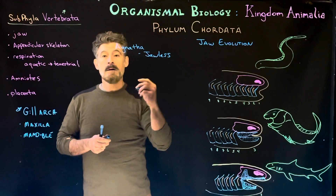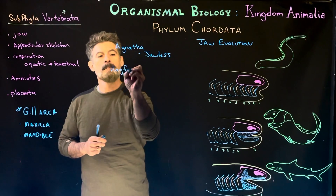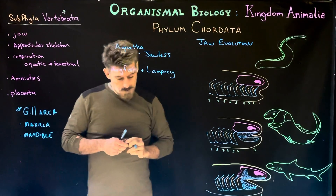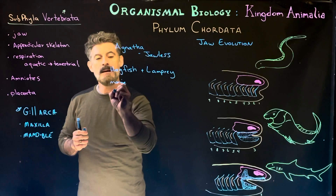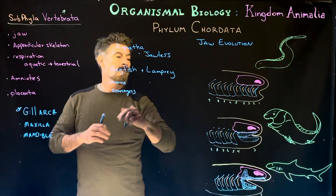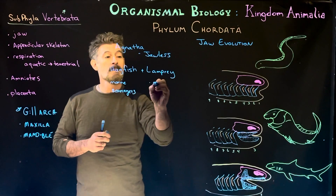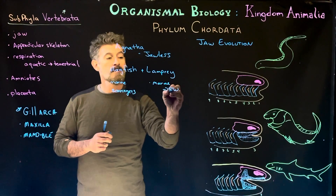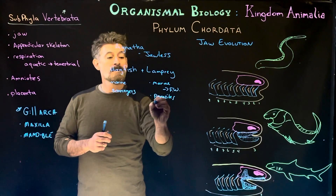There are two subgroups within the agnaths: the hagfish and lamprey. The hagfish are completely marine and scavengers. The lamprey have a variety of different feeding strategies and can be found in fresh water as well — so they can be marine, estuarine, and fresh water. And they can be parasites, though not all are; some are filter feeders.